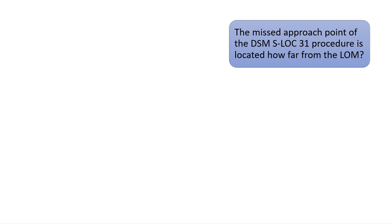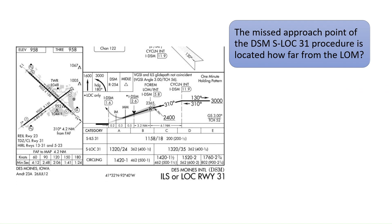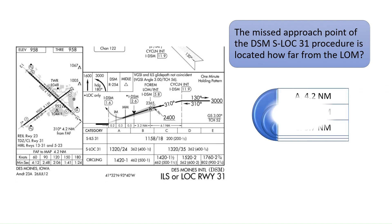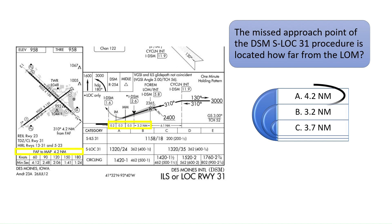The missed approach point of the DSMS localizer 3.1 procedure is located how far from the locator outer marker, abbreviated LOM? We know the final approach fix and locator outer marker is at FORUM. See the bottom left side of the chart to see that the distance from the final approach fix to the missed approach point is 4.2 nautical miles. Another way to find this is to add the distances: 0.2 plus 0.3 plus 0.5 plus 3.2 equals 4.2 nautical miles. The correct answer is A.